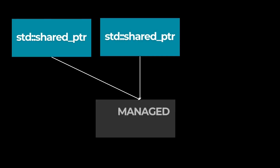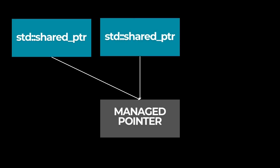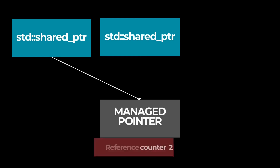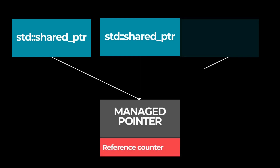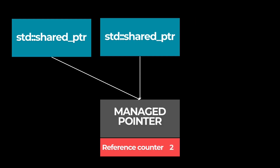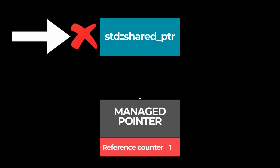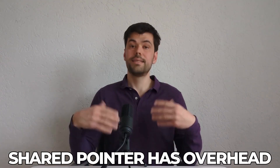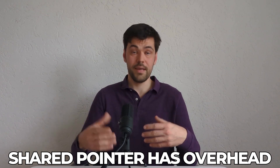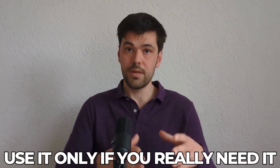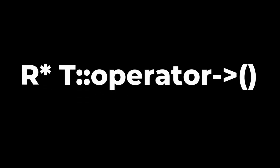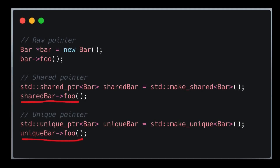Shared pointer is different. Multiple shared pointer instances can manage a single object. It contains a reference counter which increments on copy of a shared pointer and decrements on destruction of a shared pointer. When the last shared pointer is deleted, the reference counter reaches zero and the managed object is deleted. Since shared pointer has additional overhead due to the reference counter, use it only when you really need it. Both pointer types overload the arrow operator, so accessing the managed object is just as simple as with raw pointers.